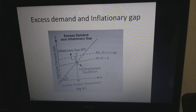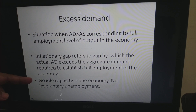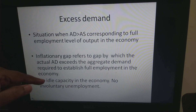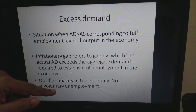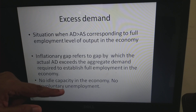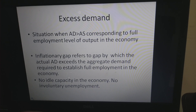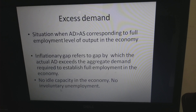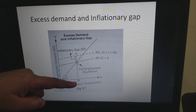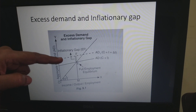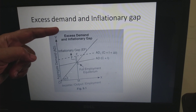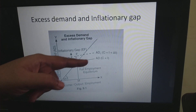To recap from the first slide: excess demand refers to a situation when AD is more than AS corresponding to the full employment level of output. There will be no idle capacity because the economy is already working at full employment. And there is no involuntary unemployment either, since full employment is defined as the absence of involuntary unemployment.